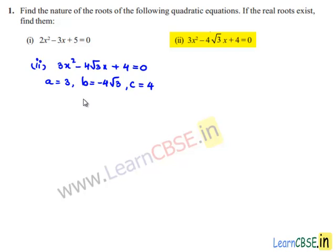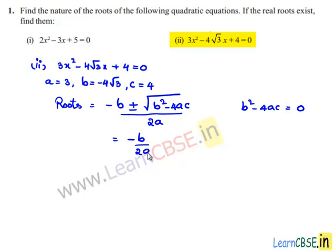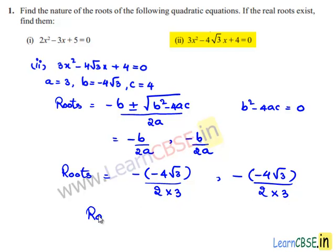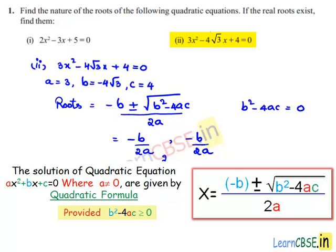Now we will find those two equal real roots. We know that roots equal minus b plus or minus √(b² minus 4ac) divided by 2a. Since the discriminant is 0, the roots become minus b divided by 2a. Therefore, the roots are minus of minus 4√3 divided by 2 times 3, which simplifies to 2 divided by √3 and 2 divided by √3.